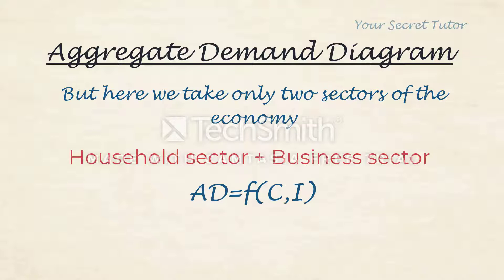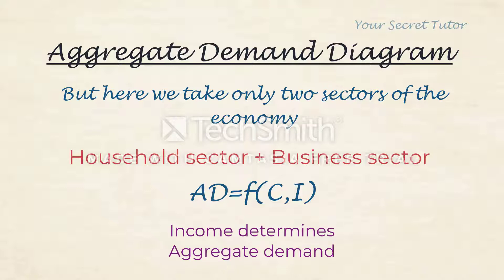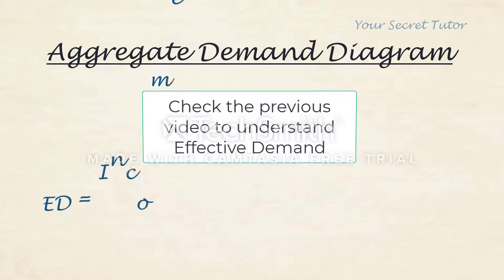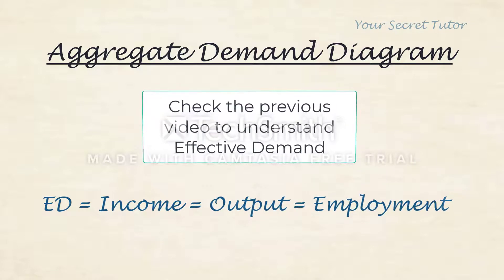In the two-sector model — comprising only the household sector and the business sector — aggregate demand is a function of consumption and investment. That is, aggregate demand equals C plus I. Income determines aggregate demand. Income is equal to output, which is equal to expenditure. In the previous video, effective demand equals income, which equals output, which also equals employment. So that equals C plus I.